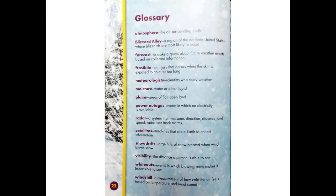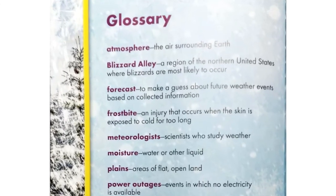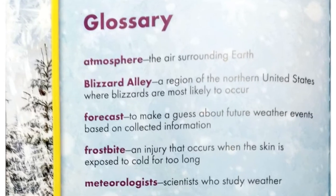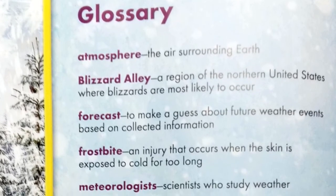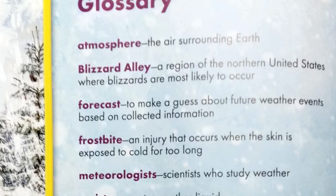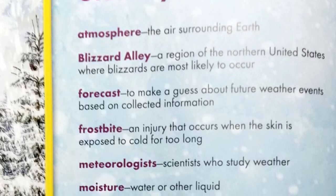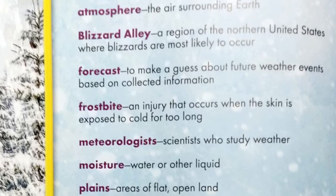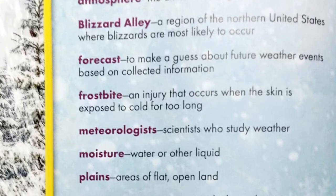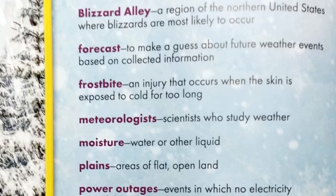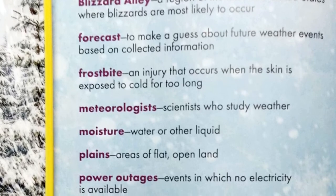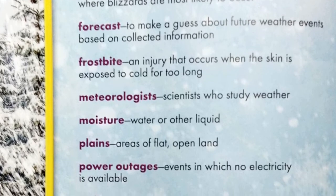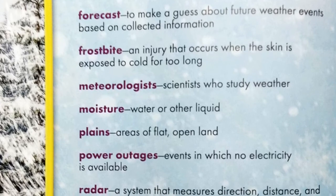Glossary. Atmosphere: the air surrounding Earth. Blizzard Alley: a region of the northern United States where blizzards are most likely to occur. Forecast: to make a guess about future weather events based on collected information. Frostbite: an injury that occurs when the skin is exposed to cold for too long. Meteorologists: scientists who study weather. Moisture: water or other liquid.